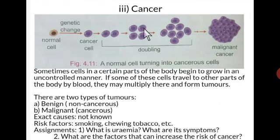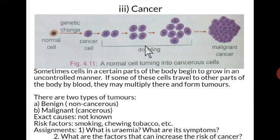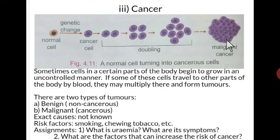Now let us come to the third category of non-communicable diseases, that is cancer. What is cancer? Cancer is a disease in which unwanted cells grow and keep on increasing in number. This is a normal cell, but after certain genetic change, it becomes a cancerous cell. This cancerous cell goes on doubling and increasing its number, taking all the nutrients of the body, causing the body to become very weak.